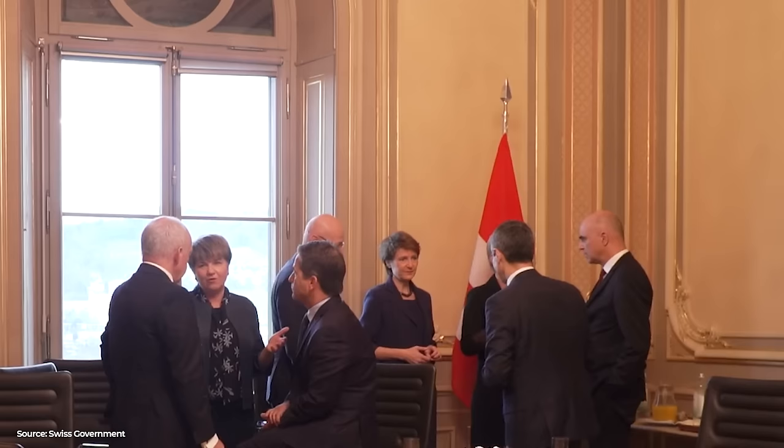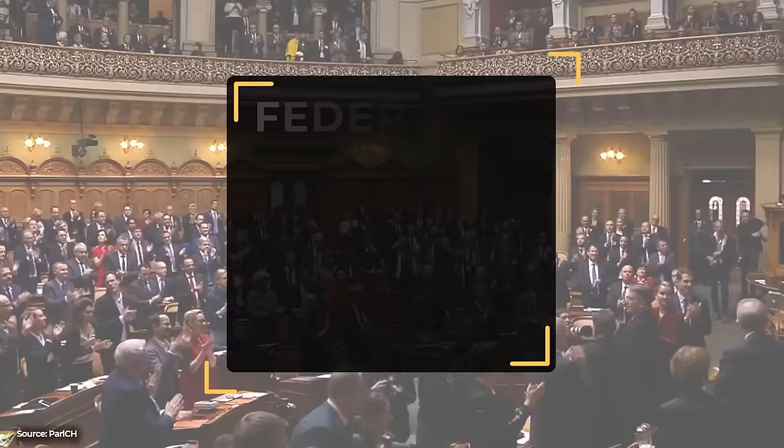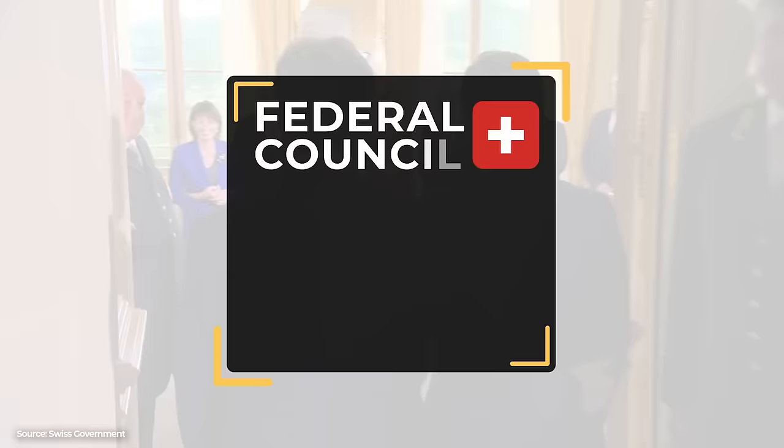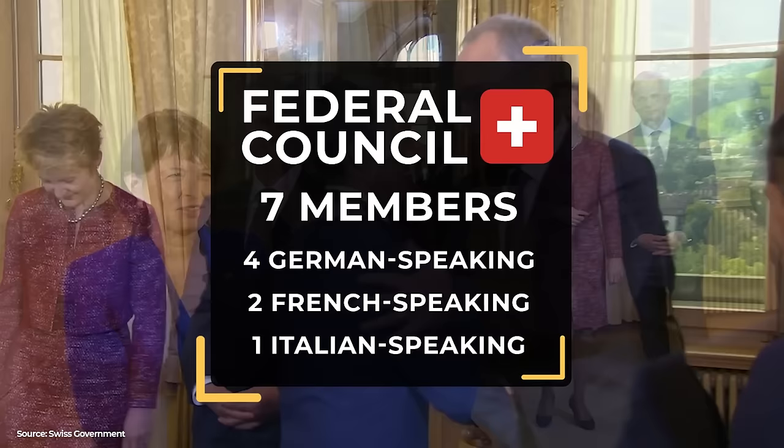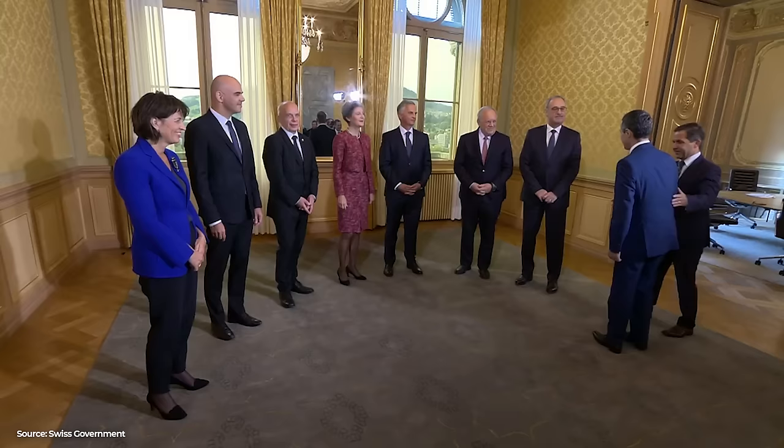And to make things even more complicated, when it comes to forming the Federal Council — that is, the government — not only are the political parties taken into account but also cultural diversity. For this reason, of the seven council members, four come from the German-speaking part, two from the French-speaking part and one from the Italian-speaking part. This way, the composition of the government is similar to the cultural distribution of the Swiss population — so that no one complains.